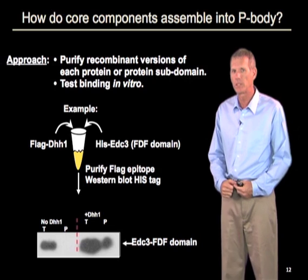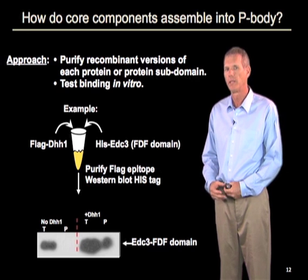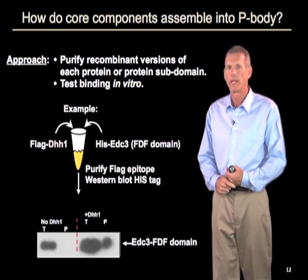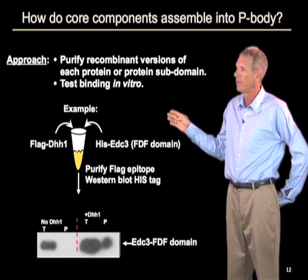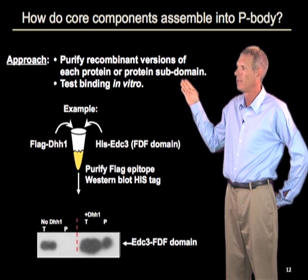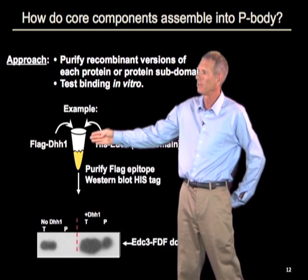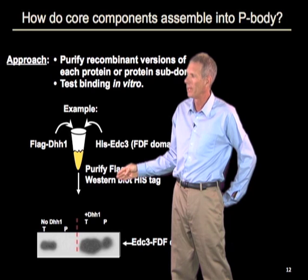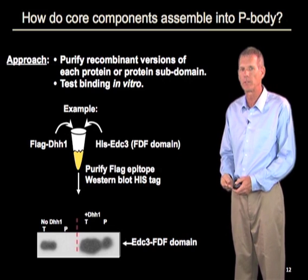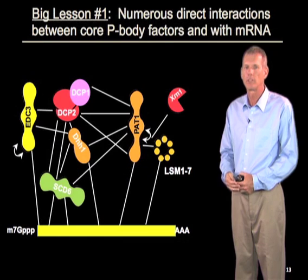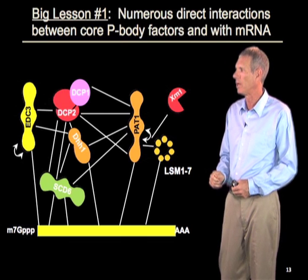One question my lab has been interested in is understanding how these proteins actually assemble onto the RNA, how they assemble into a higher-order p-body, and what that tells us about the function of these complexes. One approach is to purify all the different components and test for interactions between them. We have done a number of experiments purifying the common versions of these core components and testing their binding in vitro — for example, mixing two proteins, purifying back DHH1, and asking if the other comes along. From many such co-immunoprecipitation experiments, there is a tremendous number of interactions between these core p-body components and with the RNA molecule.